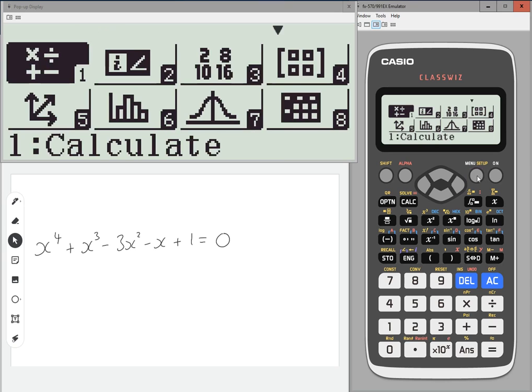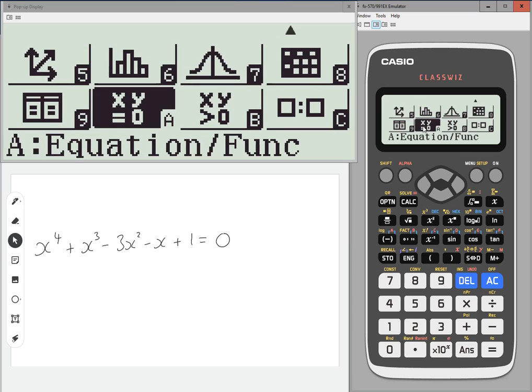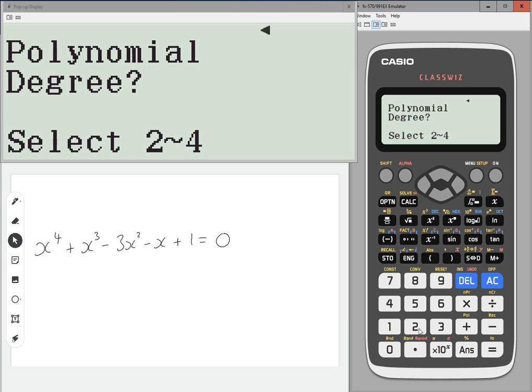We're going to go to menu, and then scroll down until you get to equation function. Press equals on that. This is a polynomial, so number two, and it's of degree four because it's a quartic.